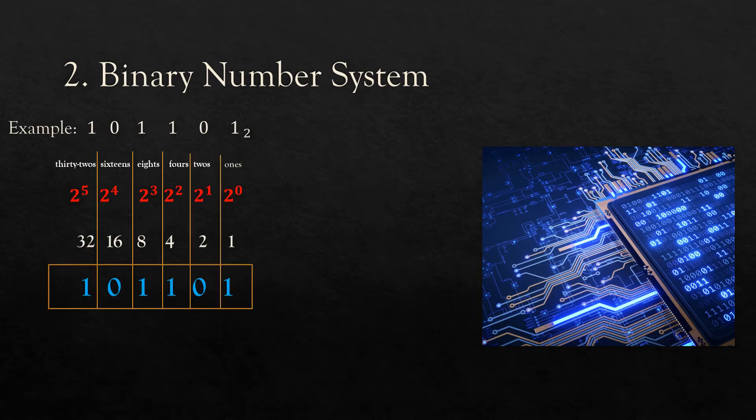In the binary number system, everything is represented with a base of 2: 2 to the power of 0, 2 to the power of 1, 2 to the power of 2, 2 to the power of 3, 2 to the power of 4, 2 to the power of 5. We know that 2 to the power of 0 is 1, 2 to the power of 1 is 2, 2 to the power of 2 is 4, 2 to the power of 3 is 8, 2 to the power of 4 is 16, and 2 to the power of 5 is 32.